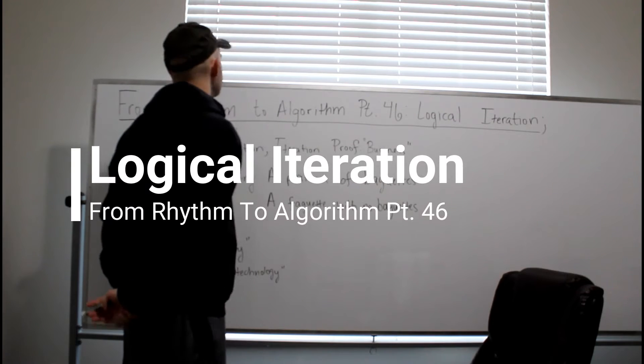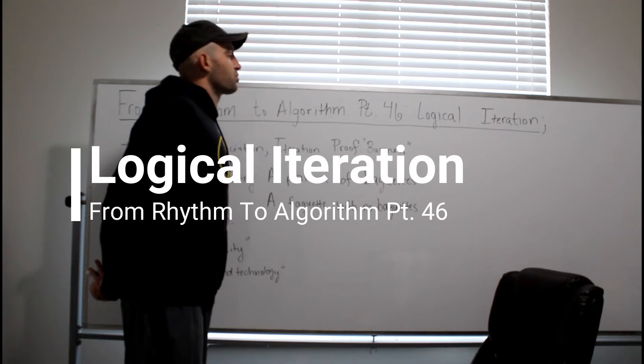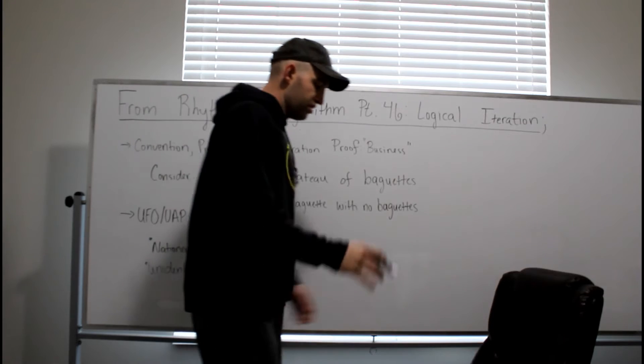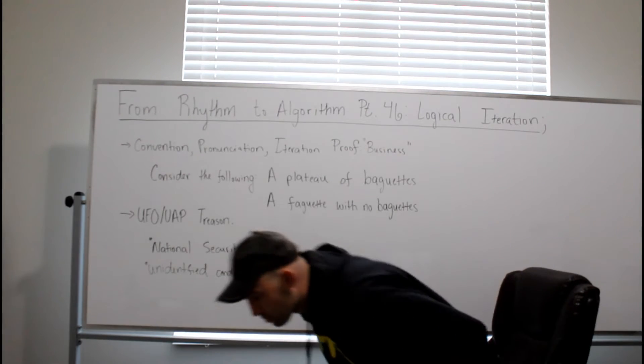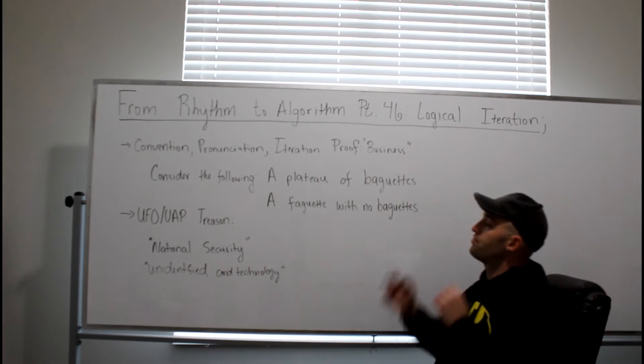Hello everybody. Welcome back to From Rhythm to Algorithm, Part 46, Logical Iteration. A very quick interesting proof, and then a quick note on UFO UAPs.